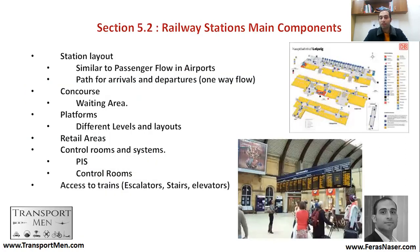Railway stations' main components include an entrance, where you go through a ticket barrier or waiting area, then move to the platforms. Similar to airports, there is a one-way passenger flow: departures come from one side and arrivals leave from the other. This one-way directional flow is an important part of station design — you don't want arrivals to mix with departing passengers, as this leads to congestion and disrupts smooth passenger flow.